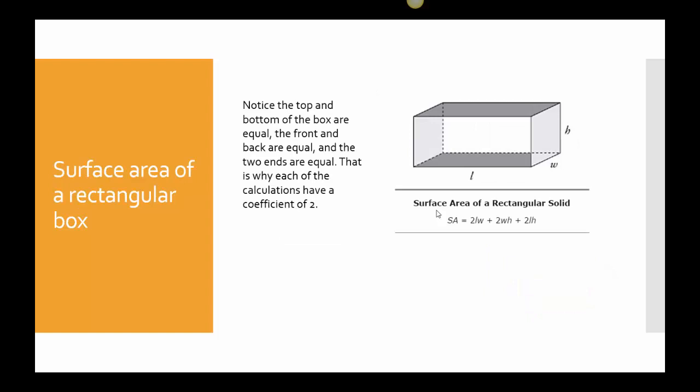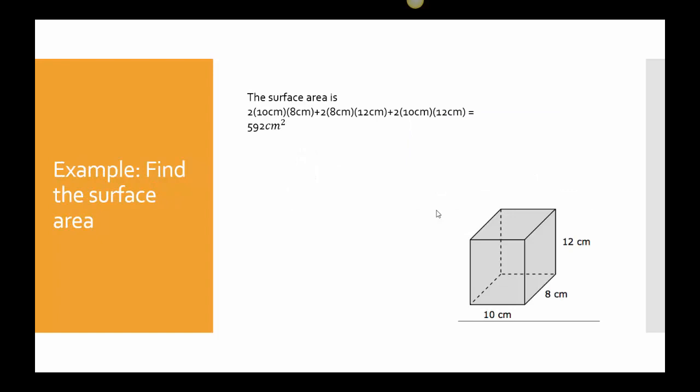Notice the top and the bottom of boxes are the same. Notice the front and the back are the same, and the two ends are the same. That is why when we do these calculations, you're going to see 2 in front of each set of calculations. So here my surface area is twice the length times the width, twice the width times the height, and twice the length times the height. Let's give that a try. The surface area for this box that's 10 centimeters by 8 centimeters by 12. I have 2 times 10 times 8 plus 2 times 8 times 12 plus 2 times 10 times 12. All of that goes in my calculator and I ended up with 592 square centimeters.